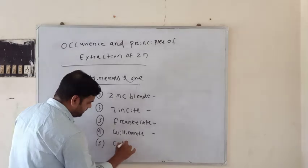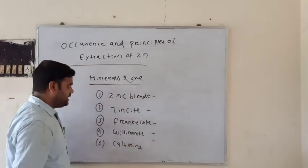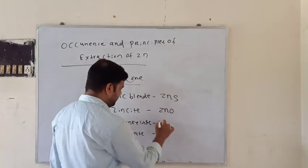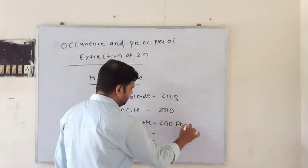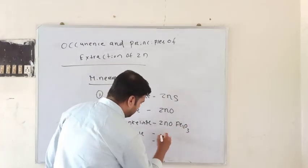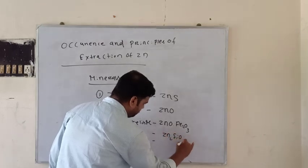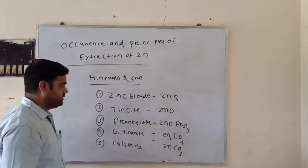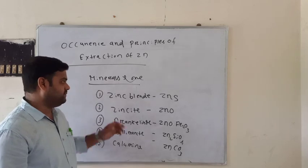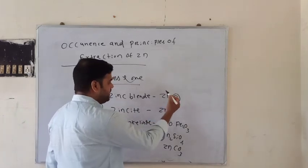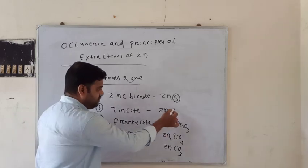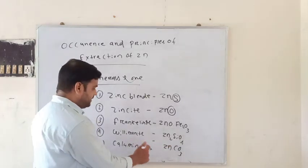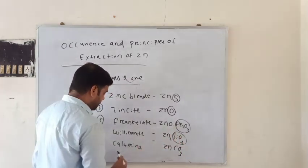The general formula for zinc blende is ZnS. Franklinite has the formula ZnFe₂O₄. Willymanite is Zn₂SiO₄. Zinc carbonate is ZnCO₃. The ore also contains iron oxide, titanium, silicon, and carbonates as associated minerals.